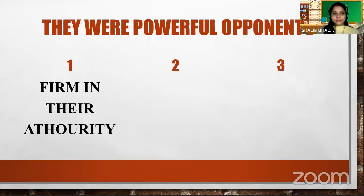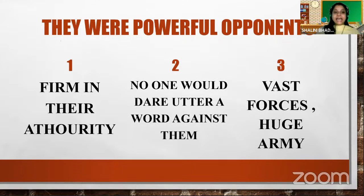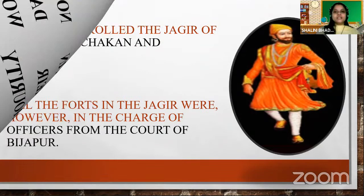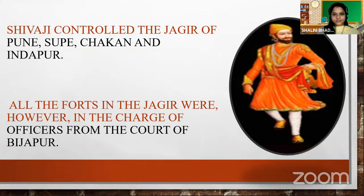These four powers were very difficult to tackle because they were firm in their authority. No one would dare utter a word against them, and they had vast forces and a huge army. During that time, Shivaji controlled the Jagir of Pune, Supe, Chakan and Indapur Parganas. All the forts in the Jagir were, however, in the charge of officers from the court of Bijapur of Adil Shah. So the Jagir was in the control of Shivaji Maharaj, but the forts were not — they were all under the control of Adil Shah.